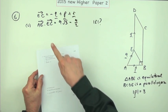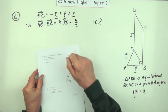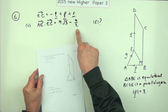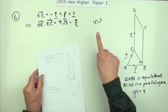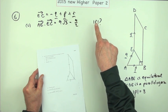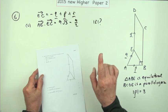So part C: given that AE dot EC is this expression, 9 root 3 minus 9 over 2, it says find r. So that means find the length of r, the magnitude of the vector r.